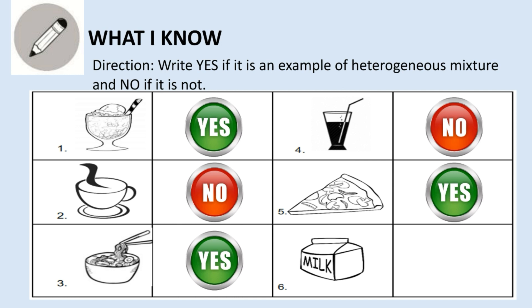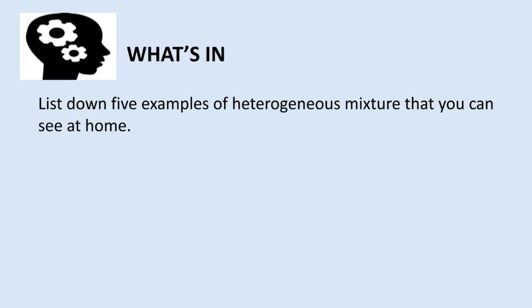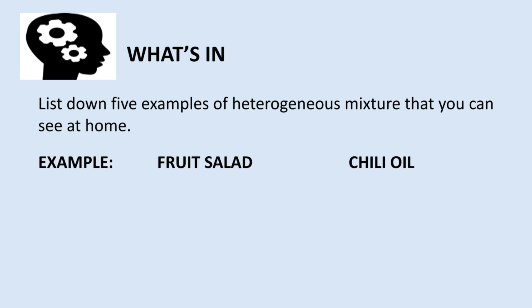Let's check your answers: one, yes; two, no; three, yes; four, no; five, yes; six, no. Congratulations if you got them all correct! Now list down five examples of heterogeneous mixtures that you can see at home. Examples: fruit salad, chili oil. Those are examples of heterogeneous mixtures because you can see those ingredients after combining — those ingredients are still recognizable.